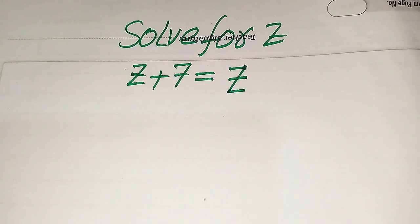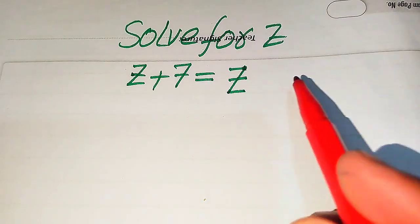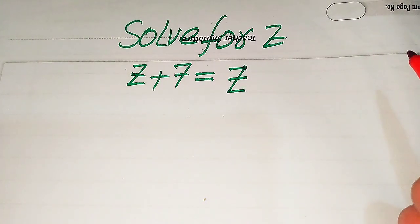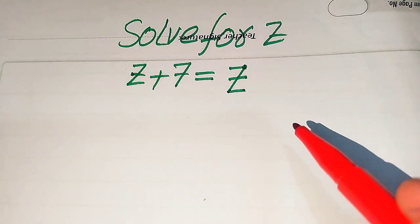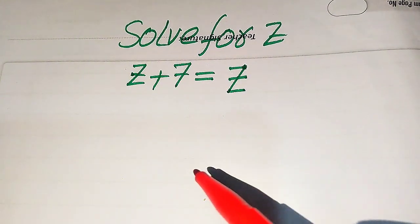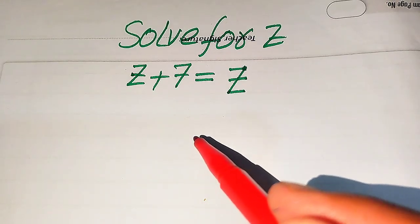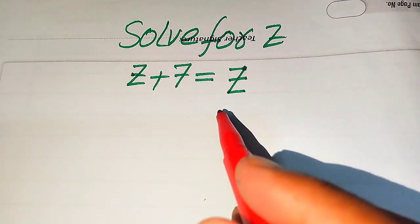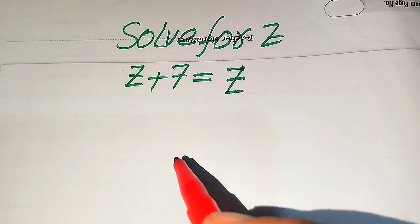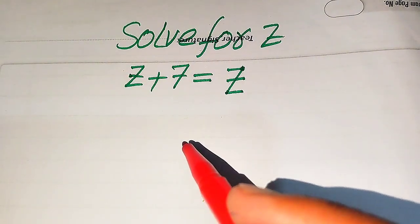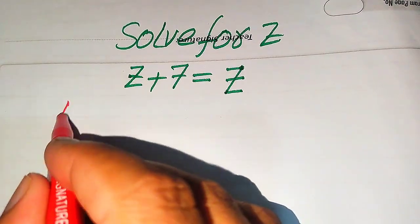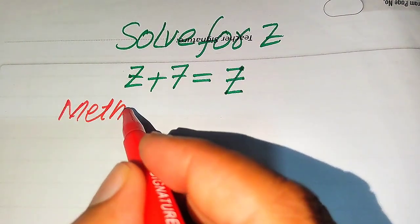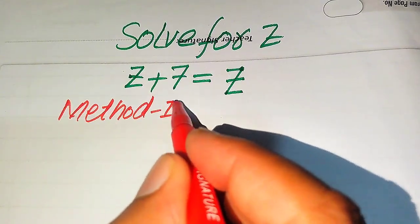Hello everyone. How to solve this problem: find the values of z if √(z + 7) = z. We solve this problem for all the values of z — finding the roots of z. We will solve this using two methods, and in the first method I'll give you a nice technique to easily get the values of z.